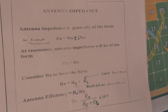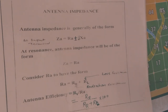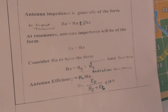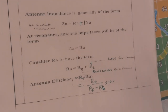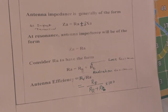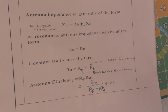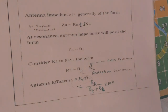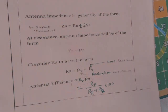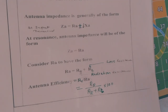Ra has the form Ra = Rr + Rl, where Rl is the loss resistance and Rr is the radiation resistance. From the circuit point of view, the power radiated by the antenna is considered a loss to the system. Antenna efficiency is defined as Rr / Ra, where Ra = Rr + Rl. If the antenna is lossless, Rl equals zero and efficiency is 100%, but practically Rl has some value so antenna efficiency is always less than 100%.